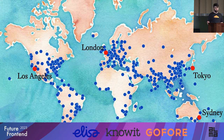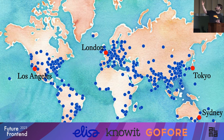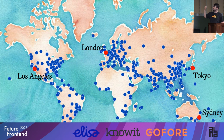Edge computing is really about taking a different approach to this. Instead of having one server in Helsinki, you have hundreds of servers all around the world, and your users hit the server that's closest to them. So in London they'll hit a server in London, Tokyo a server in Tokyo, Sydney in Sydney, Los Angeles in Los Angeles, and so on.